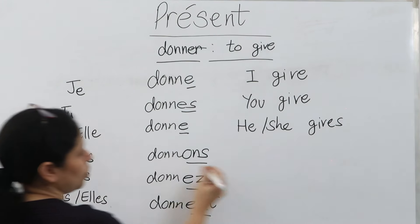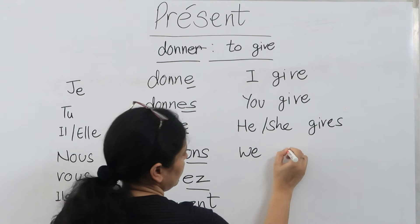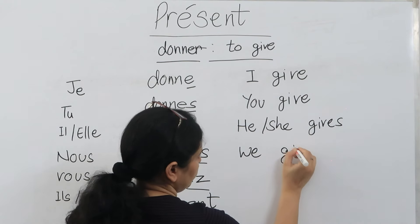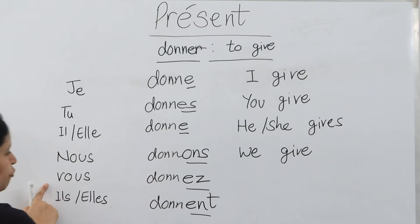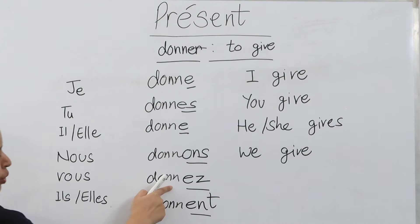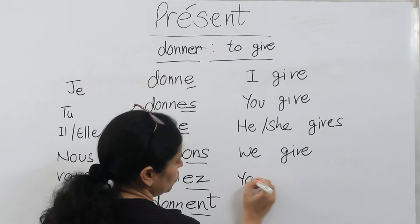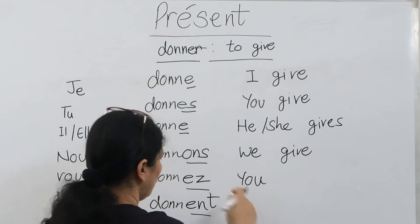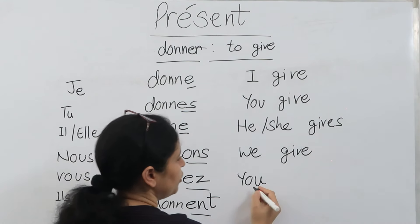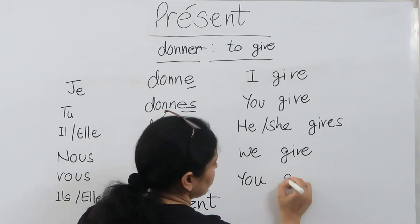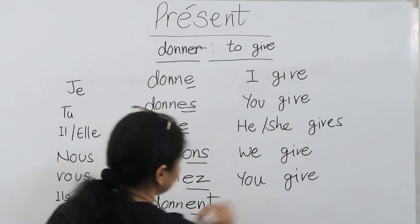'Nous donnons' means 'we give.' 'Vous donnez' means 'you give' — someone who is elder to you, or also the second person plural, meaning 'you all give.'